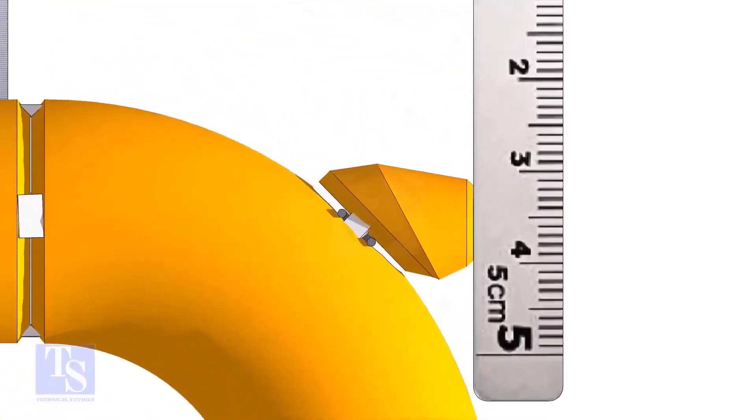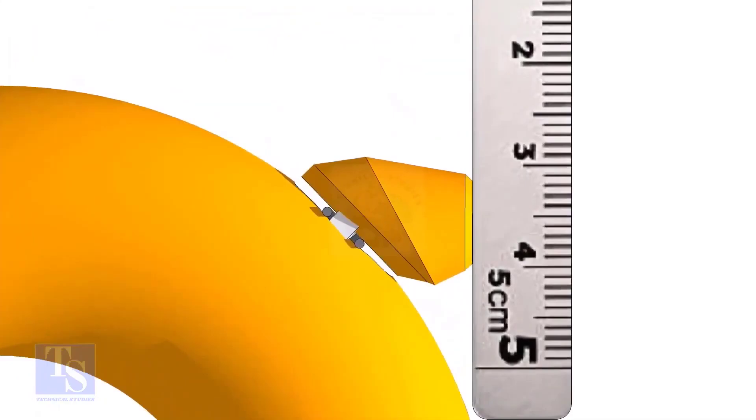Maintain the vertical squareness and tack weld on the top and bottom side of the elbowlet.